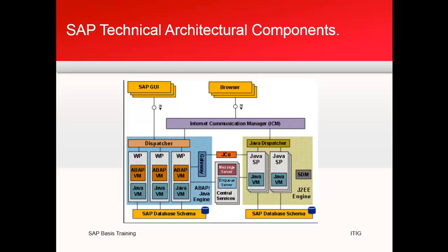This is your J2EE system, which will connect to the database as and when required by the application. On the ABAP side, you are connecting from SAP GUI to the dispatcher, and the dispatcher in turn connects to the work process. The work process, if required, will connect to the database schema. The connection between ABAP and Java is done through JCO. In the middle you can see one of the core components: the message server and the NQ server. This is called the central services instance.